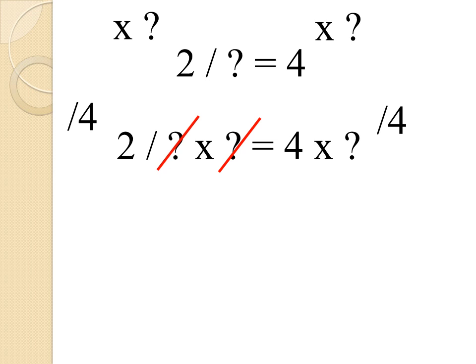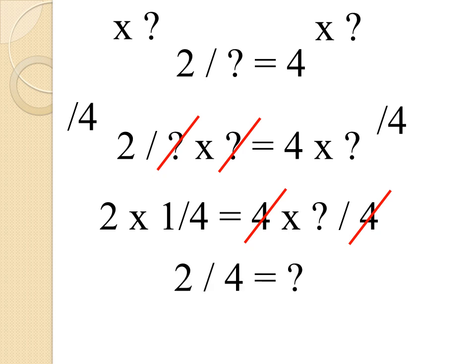I can do that by dividing by 4. Once again, I divide 4 on both sides, giving me this. The 4s cancel. And I'm left with 2 divided by 4, which is 1 half.